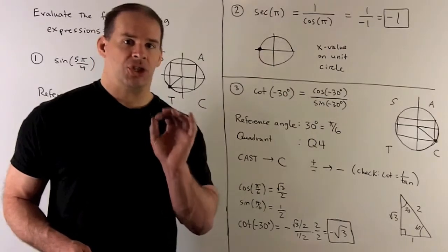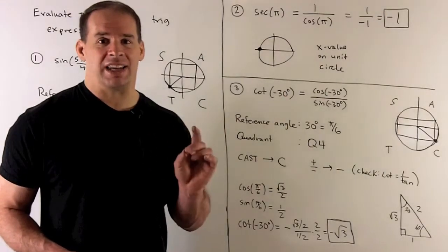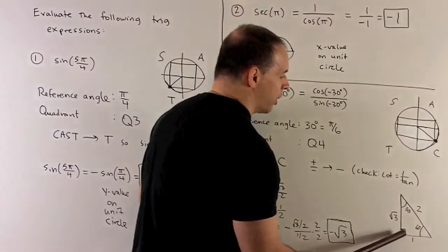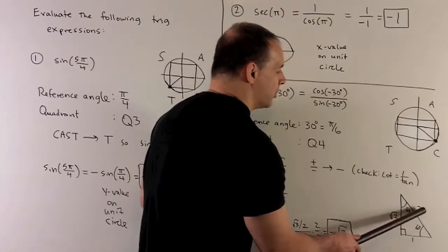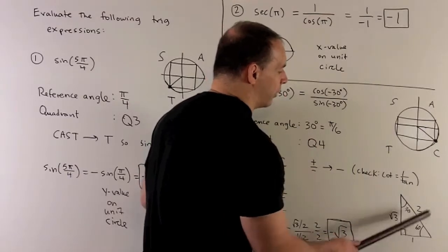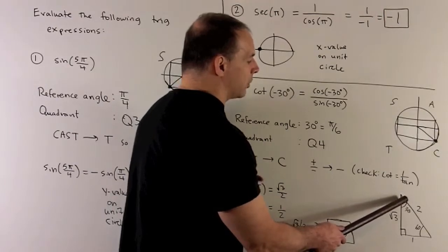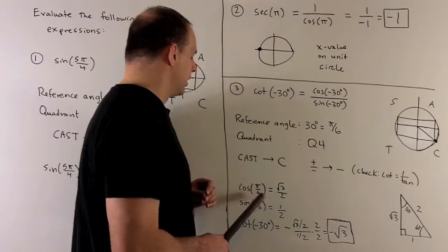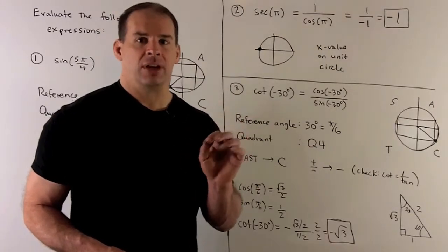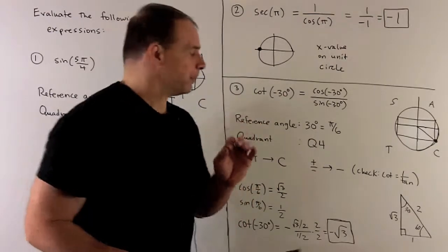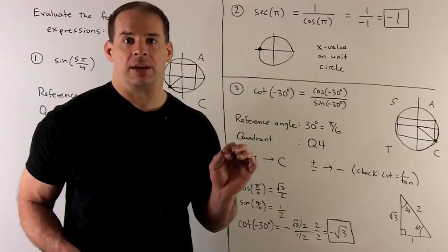Another way to check: draw a 30-60-90 right triangle as clearly as possible so you can distinguish the 30 and 60 degree angles. The short side has length 1, the hypotenuse has length 2, and the other side has length √3 — the Pythagorean theorem checks out. For cosine of π over 6 or 30 degrees, that's adjacent over hypotenuse = √3 over 2. For sine, that's opposite over hypotenuse = 1/2. And for cotangent, since it's 1 over tangent = adjacent over opposite, we get √3 over 1 = √3, and then the quadrant gives us the minus sign, confirming −√3.